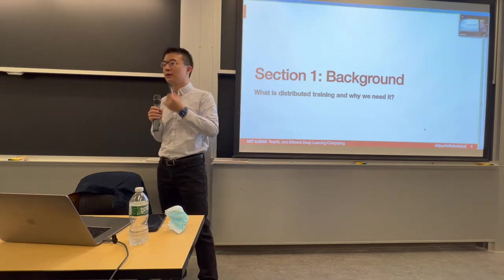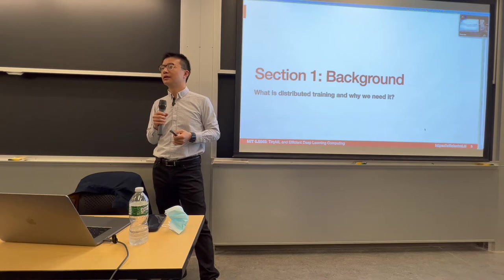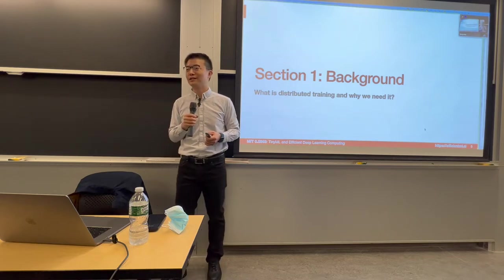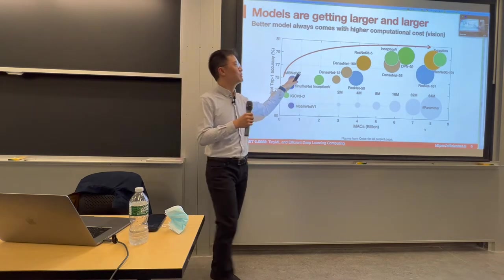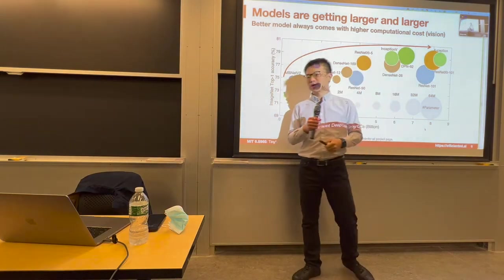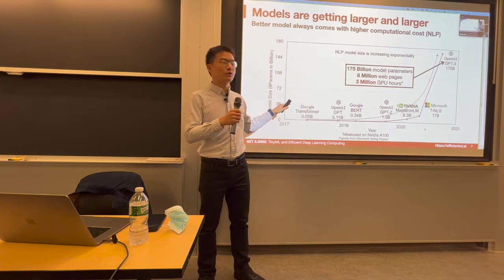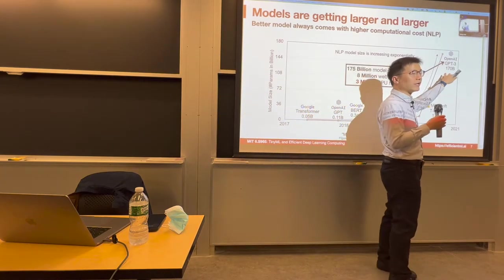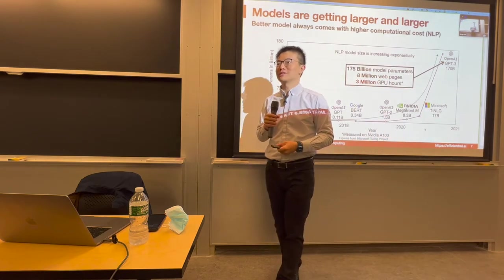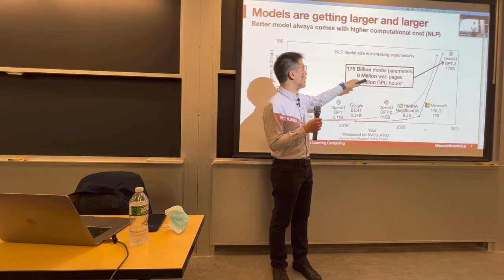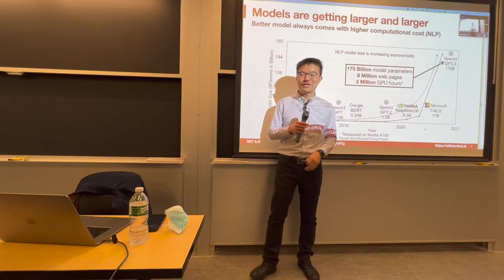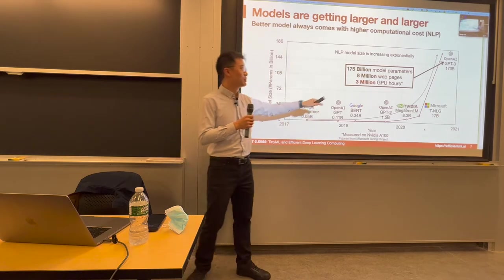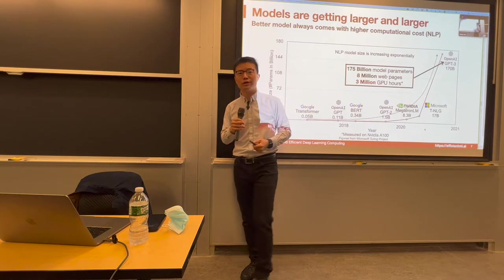Another example: a student trained distributed for a final project, picking the best result from multiple runs. As we've seen, higher accuracy models usually require a lot of computation. Today these models are getting super big — GPT-3 contains 175 billion parameters, trained across 8 million web pages, requiring 3 million GPU hours on a single GPU. So we want to increase the number of GPUs and decrease the hours.